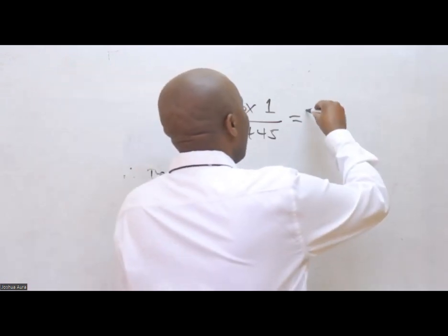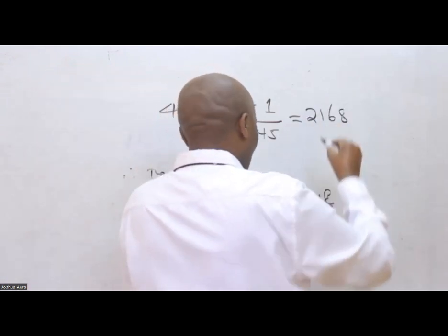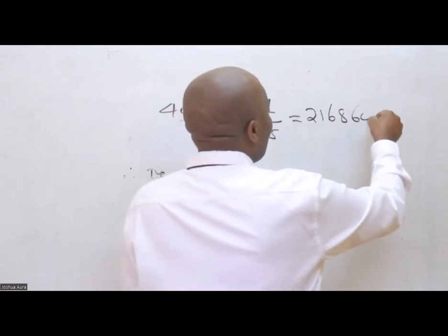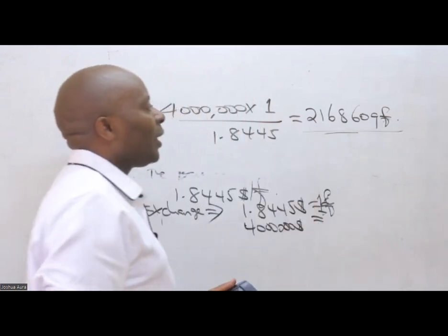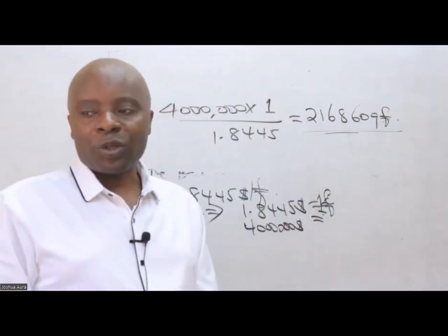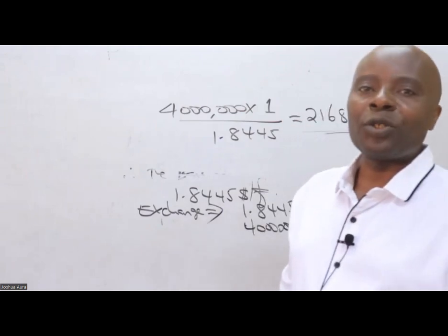So if you do it that way, we have here 4 million divided by 1.8460, which gives me 2,168,609 pounds.